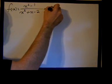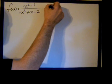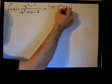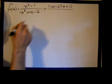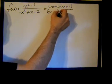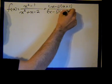So the numerator factors into x minus 1 times x plus 1, and the denominator factors into x minus 1 times x plus 2.